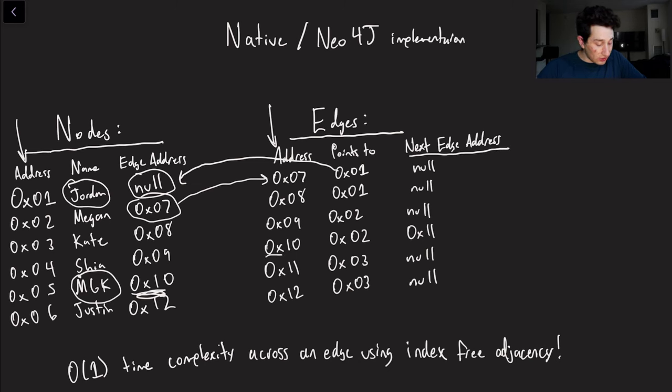So if we go to the edge that is at the address 10 we can see that it's pointing to node 2 so that's pointing back to Megan Fox, however at the same time it also points to the next edge right here so that if we're trying to traverse all of MGK's nodes or the ones that it points to, we can go quickly from this edge to this edge over here, see that it's pointing to the thing at address 3, and then jump right back to see that MGK is also hitting on Kate Upton.